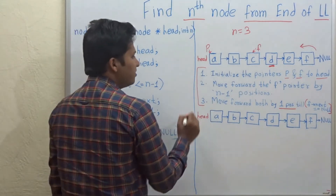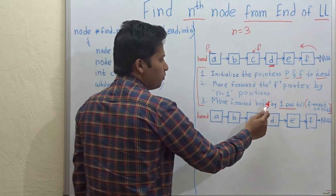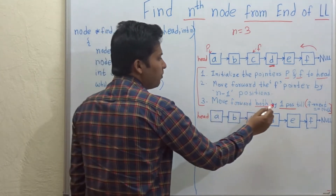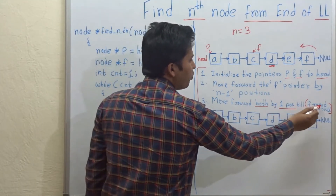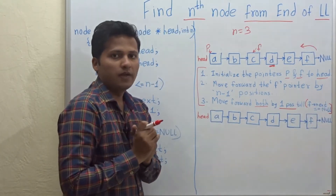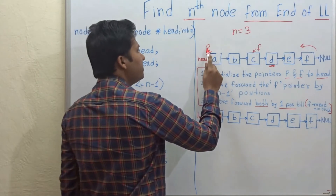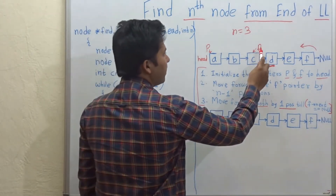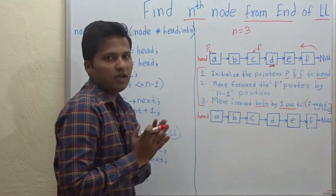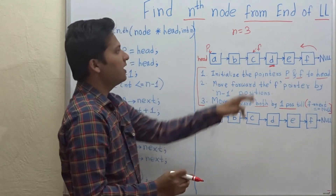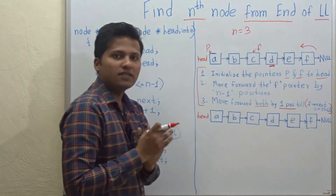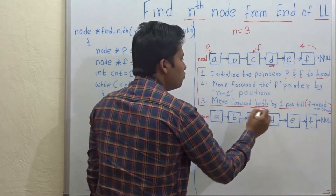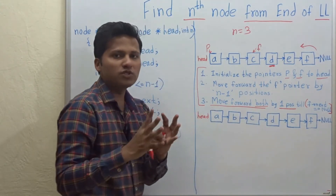The third step says to move forward both pointers p and f by 1 position each, till f->next equals null — which means till f points to the last node. As we want to move both pointers forward, we have to use a while loop here.